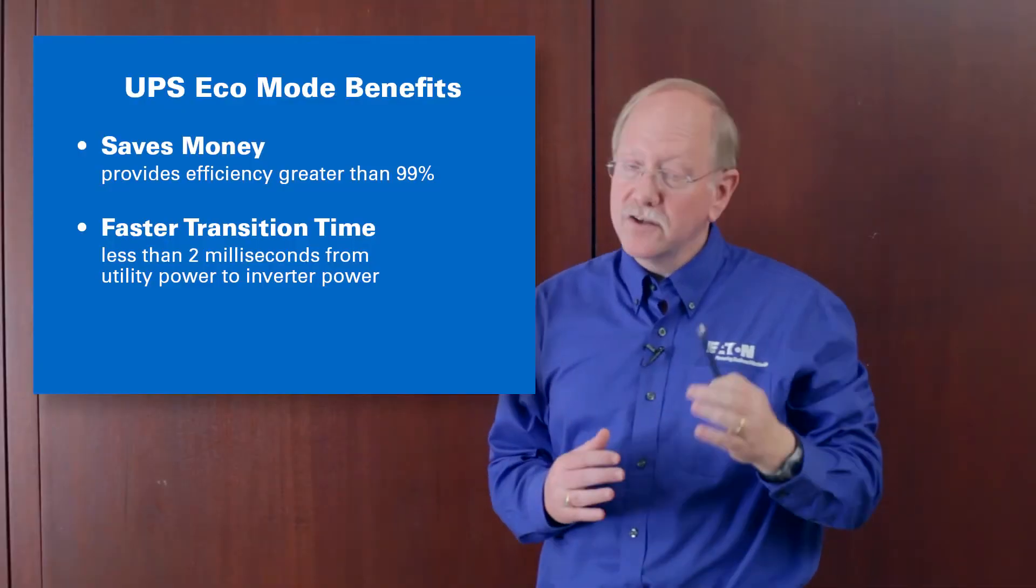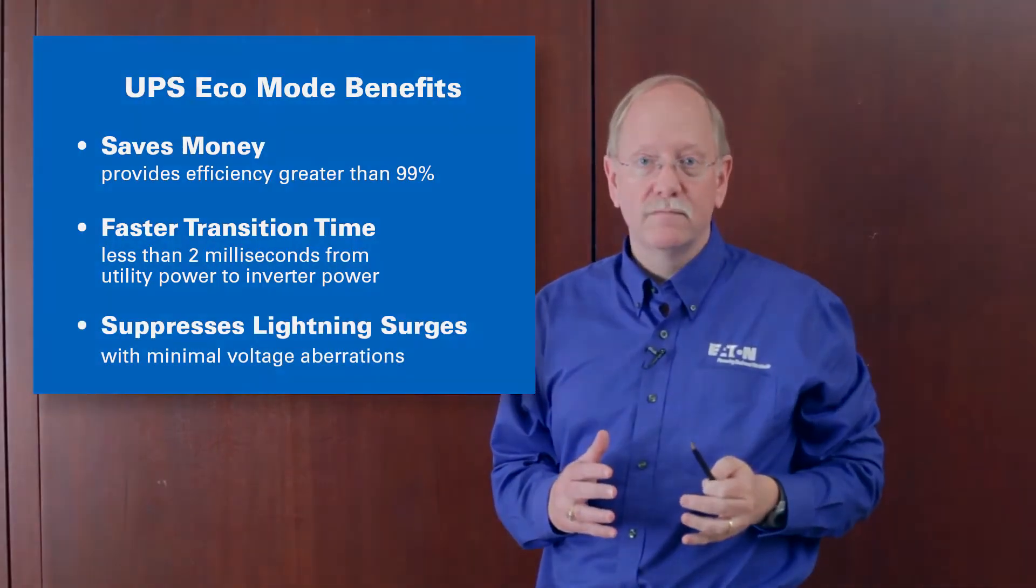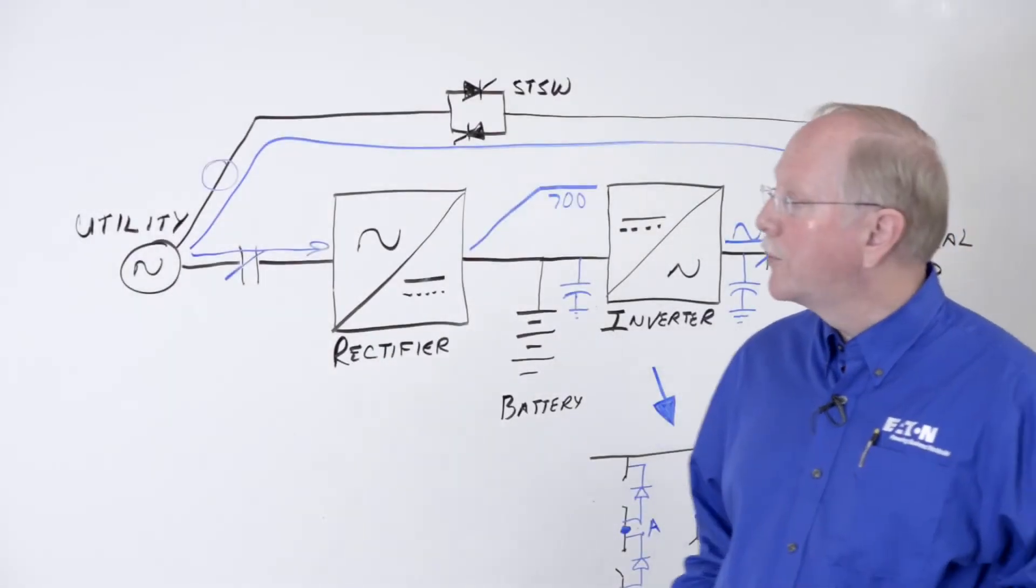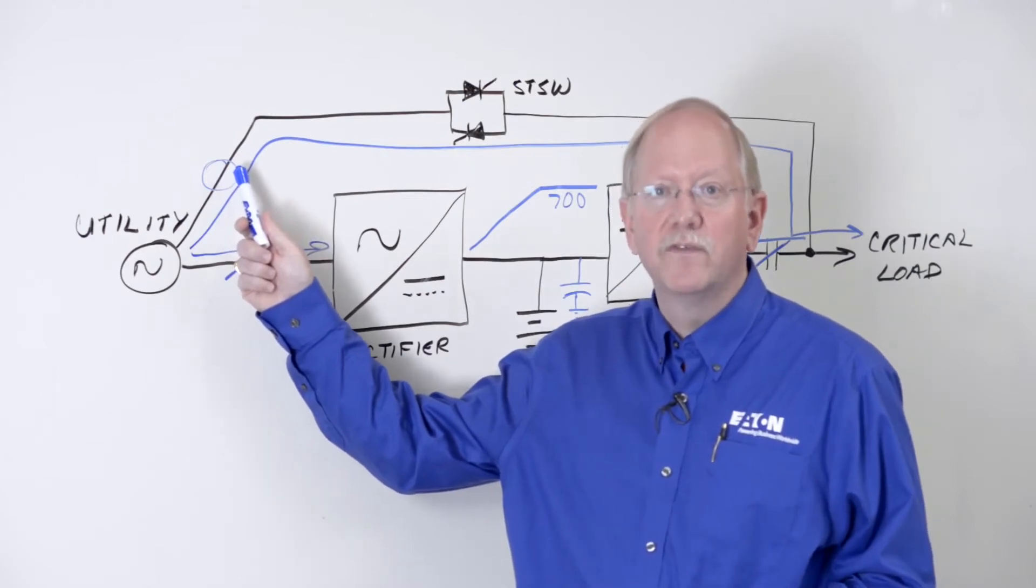An eco mode UPS, a good one, can actually suppress lightning strike style surges. So what the graphic shows is even when we impress a 6,500 volt spike right on the input of the terminals of the UPS.